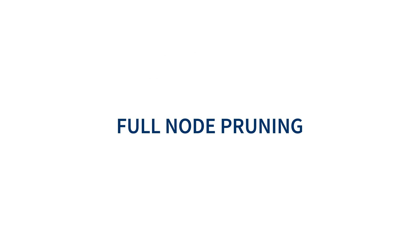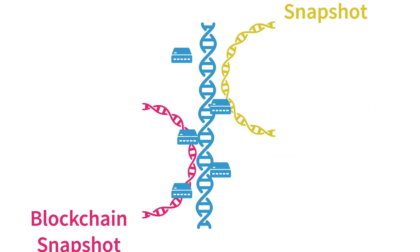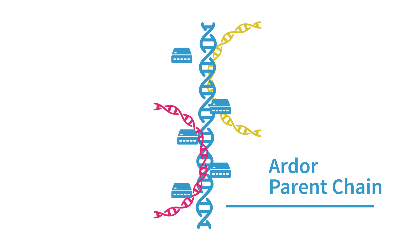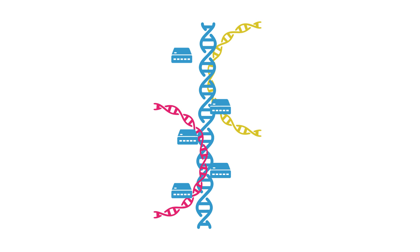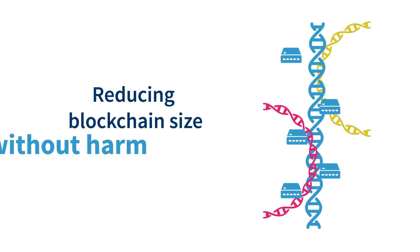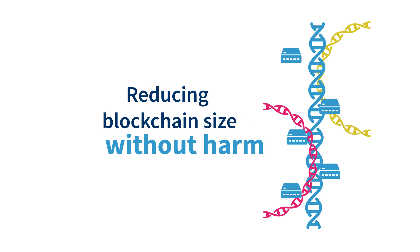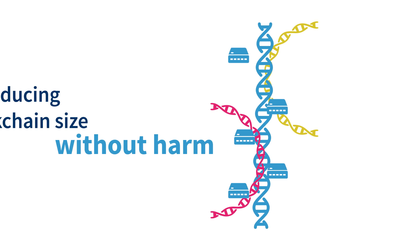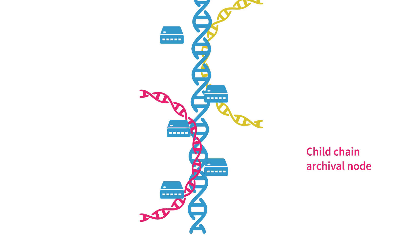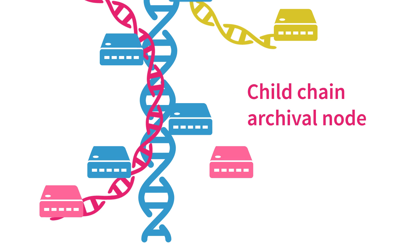Jelurida, the development team behind Ardor, addresses this problem by implementing full node pruning, where transactional data on child chains is regularly removed from the full nodes on the Ardor parent chain after a snapshot is taken of its most recent state, thus reducing the blockchain size without affecting the balances and ongoing transactions on each chain and the security of the whole platform. However, full nodes can opt in to become archival nodes for specific child chains and store the historical data of these chains.